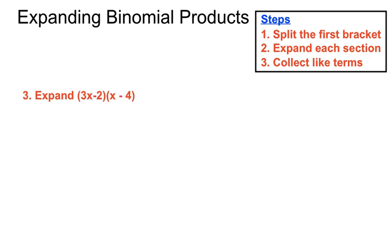Third example. Let's split the first bracket into 3x multiplied by (x − 4) and a minus 2 multiplied by (x − 4). So 3x outside of (x − 4) and minus 2 outside of (x − 4). Once again we have a minus number in front of a bracket in that second section, so we'll have to be a little careful there.